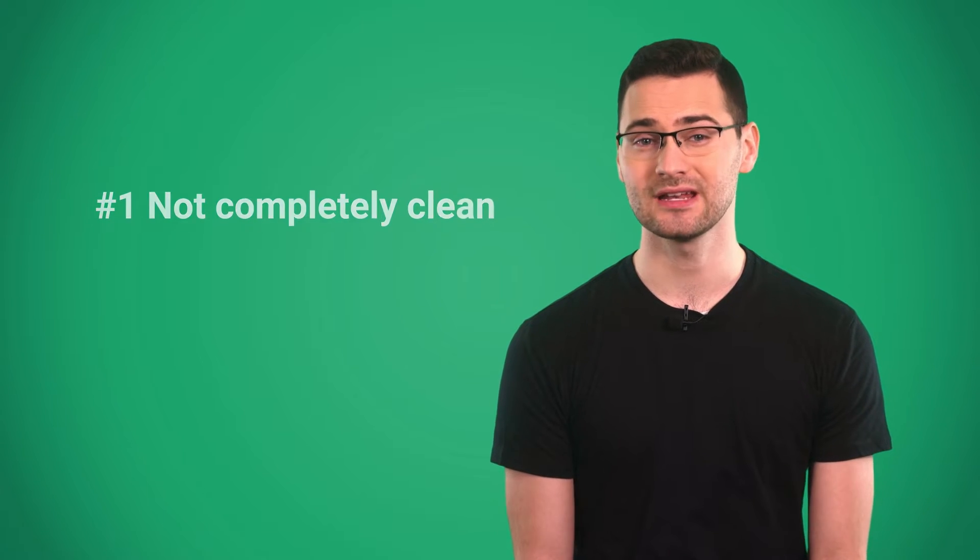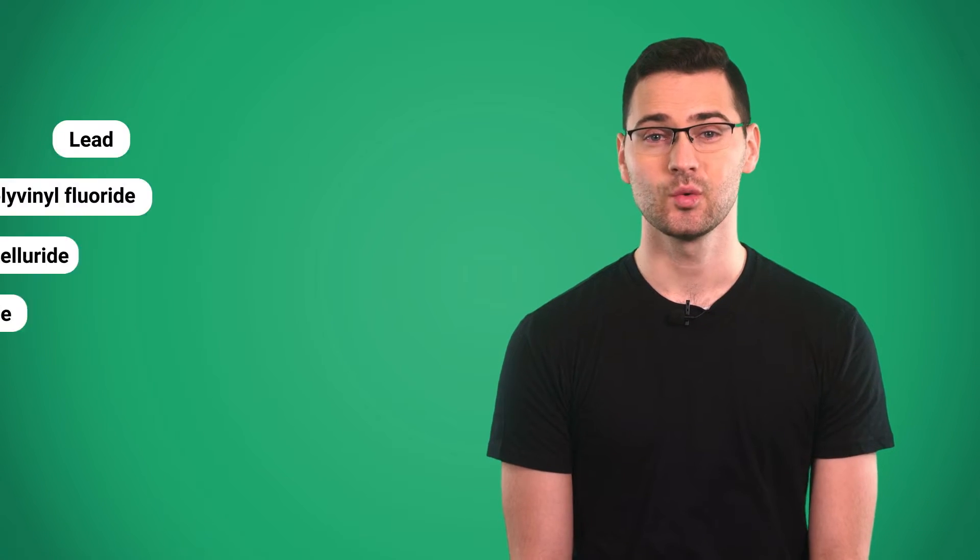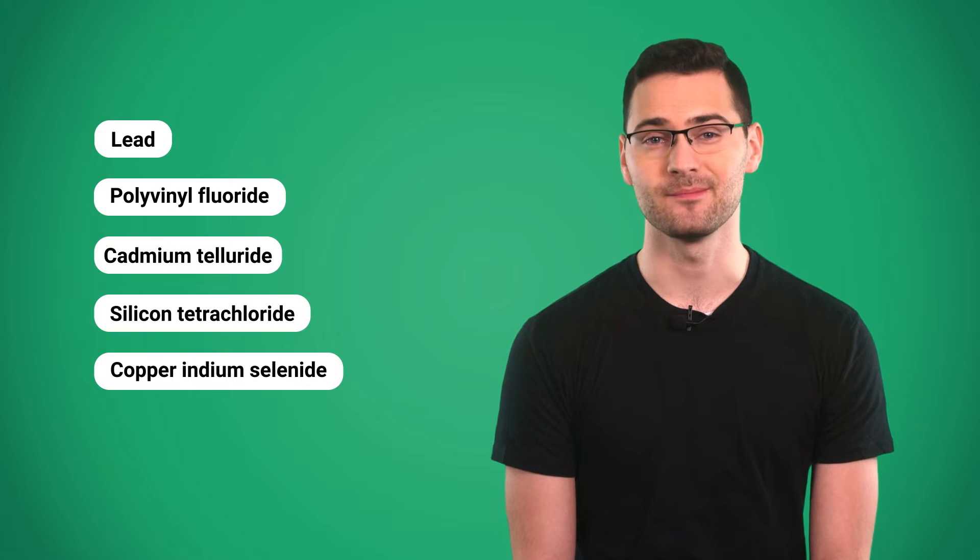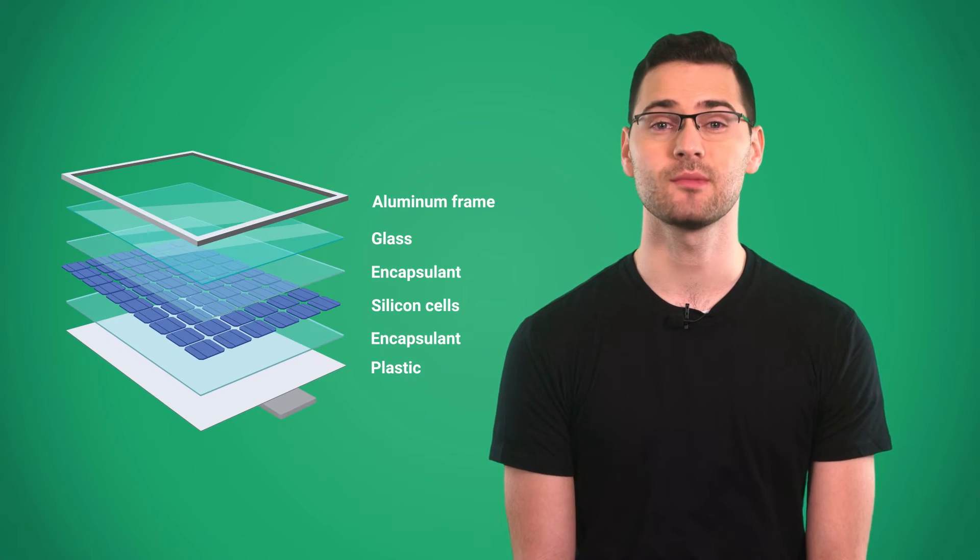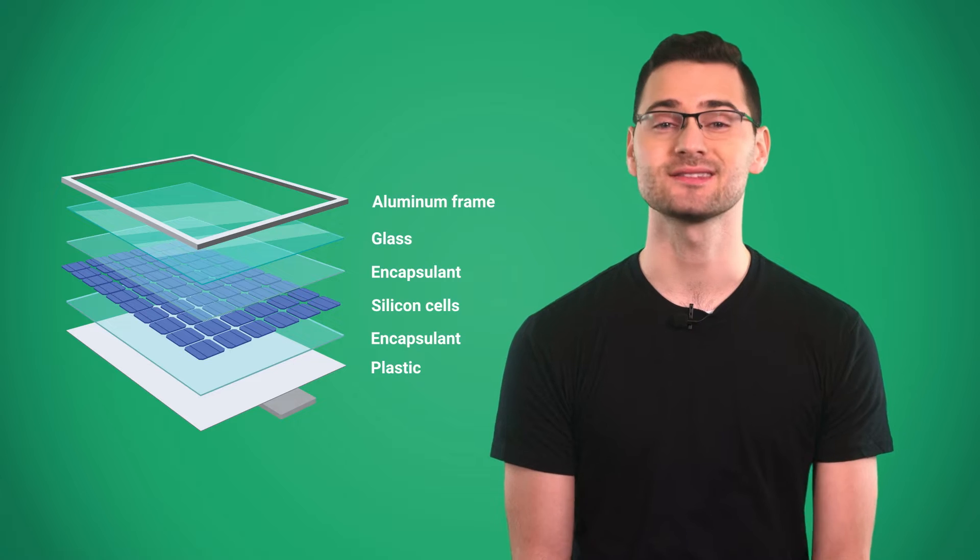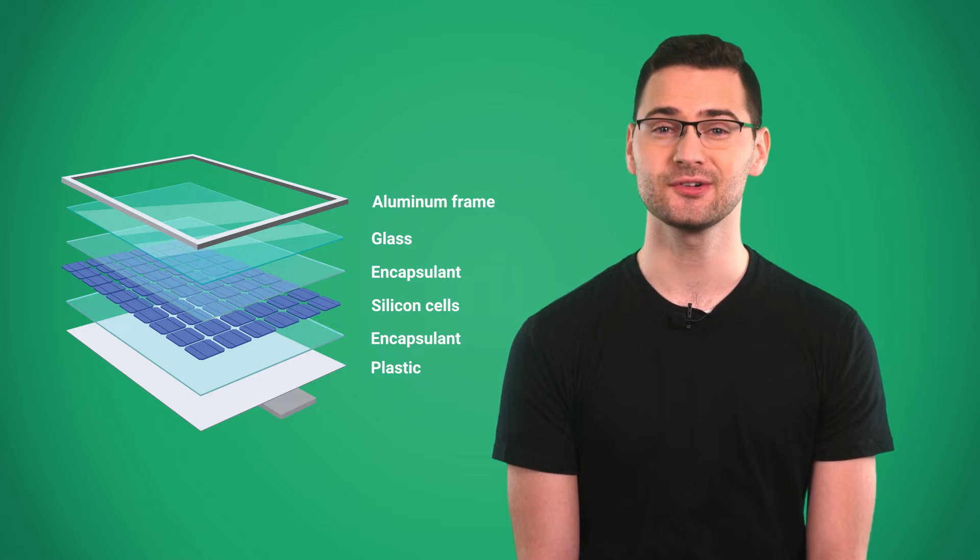While solar panels don't release greenhouse gases by themselves, we use toxic chemicals to make them, and waste is often dumped into the environment. We also haven't streamlined the process of disposing of old panels yet. Panels are mostly glass, a bit of plastic, and some aluminum.